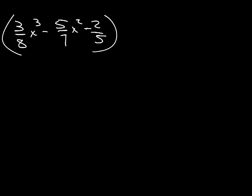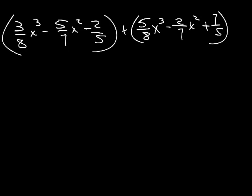We have 3/8 x cubed minus 5/7 x squared minus 2/5. And that's in a parenthesis. And we're going to add. We like to add because that means we don't have to change the sign of anything. So, all we have to do, let's just go ahead and do that. Take off the parentheses. And we can just combine like terms.